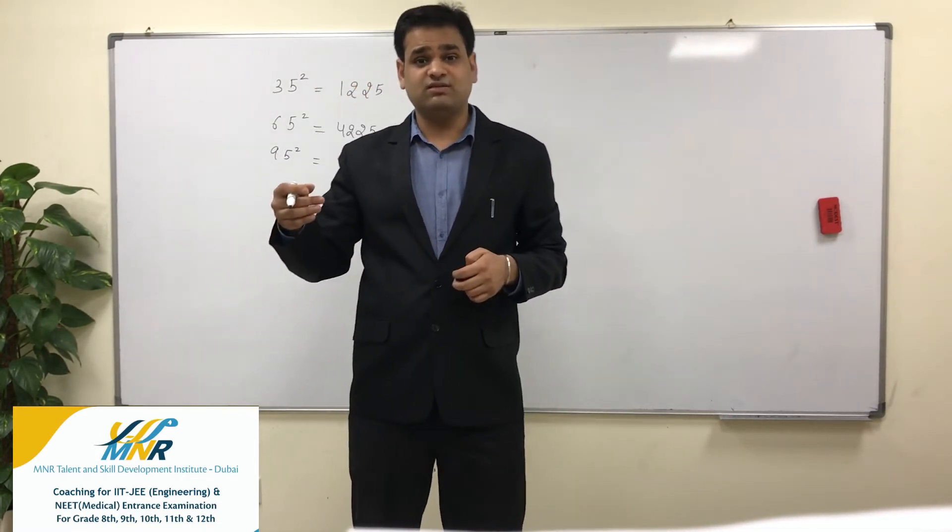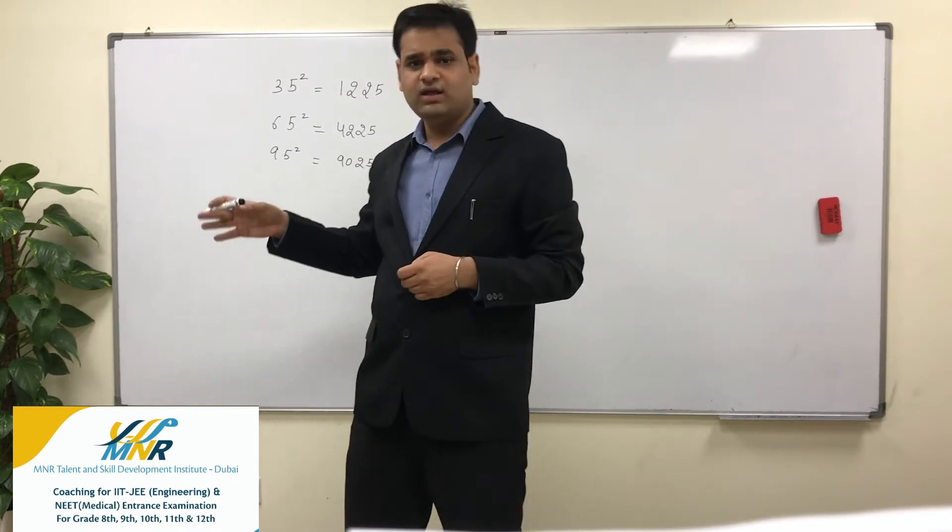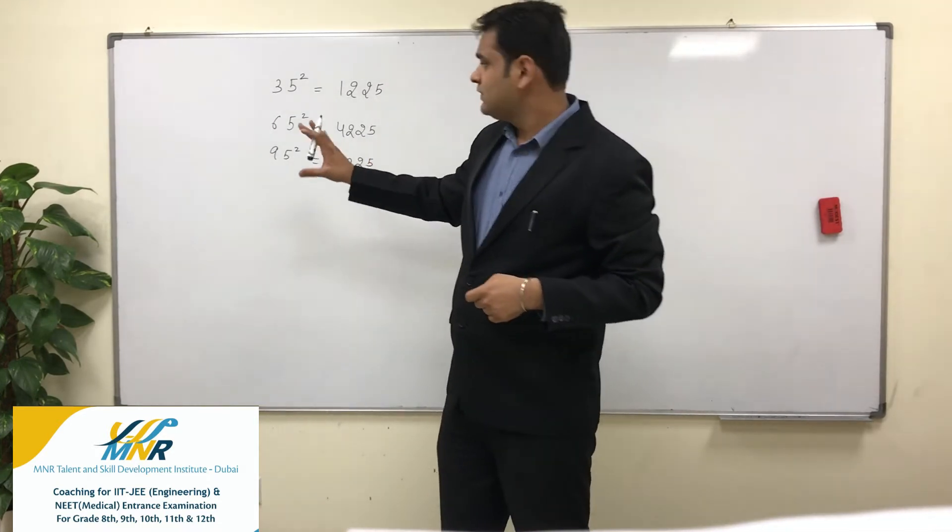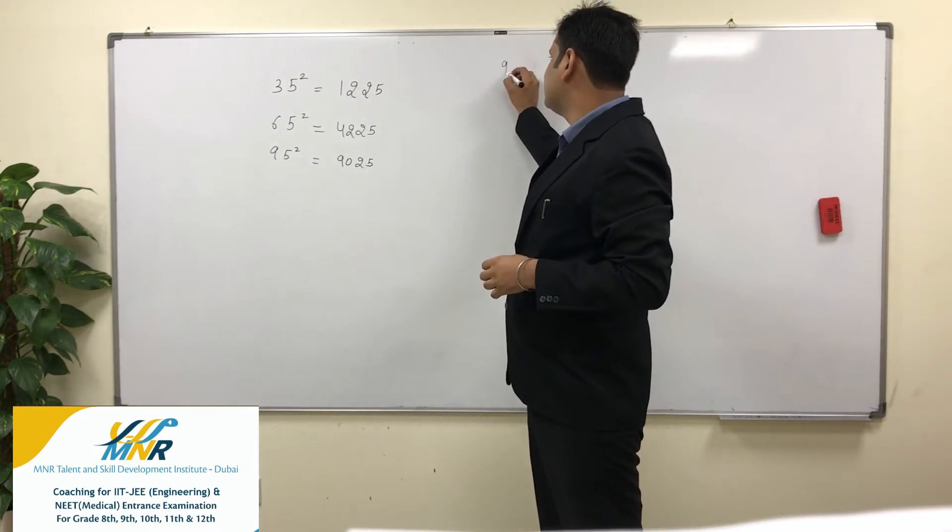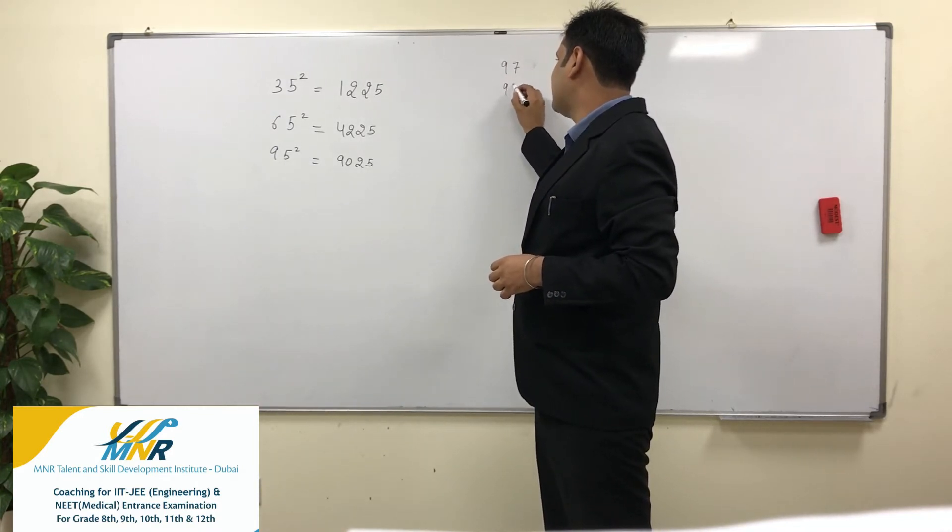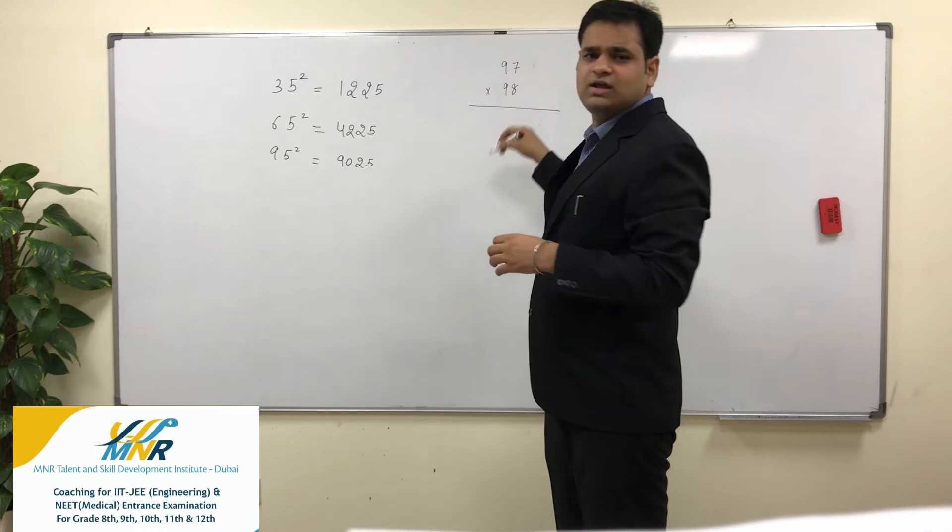Now I'll do some small multiplication also. Let's say people multiply 97 with 98 or 92 with 93. How to solve this in an easy way?